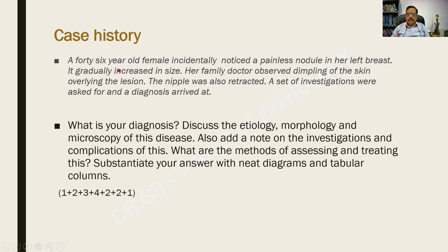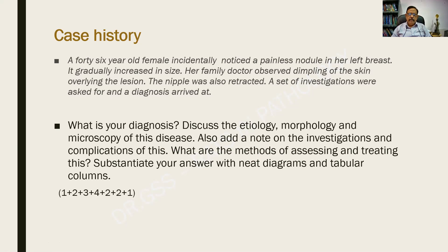See this case history. A 46-year-old female incidentally noticed a painless nodule in her left breast. It gradually increased in size. Her family doctor observed dimpling of the skin and retraction of the nipple. A set of investigations were asked for and a diagnosis arrived at. What is your diagnosis? Discuss the etiology, morphology, and microscopy of this disease. Add a note on investigations, complications, and methods of assessing and treating this case. Substantiate your answer with diagrams and tabular columns. This question has been repeatedly asked as an essay and students were bewildered by it.